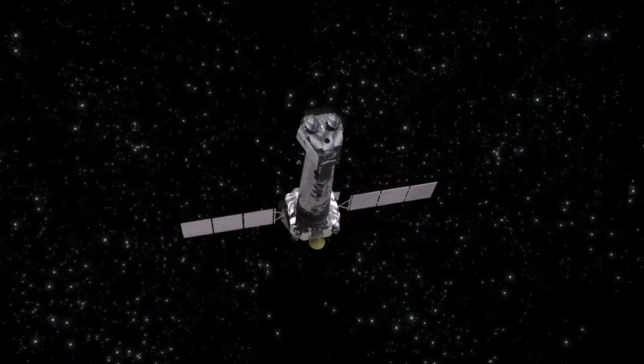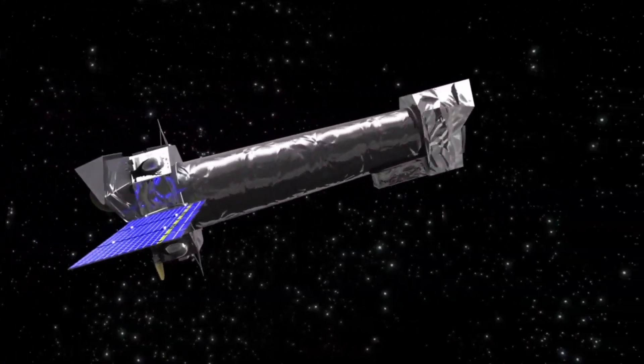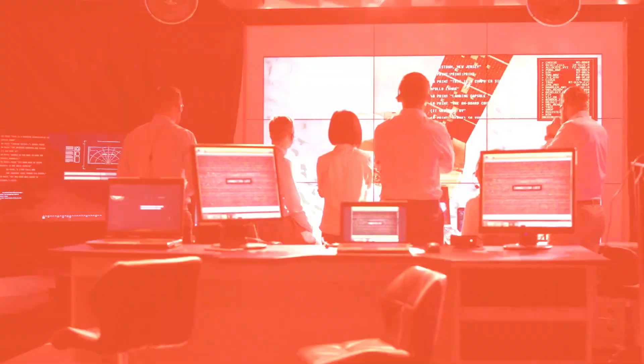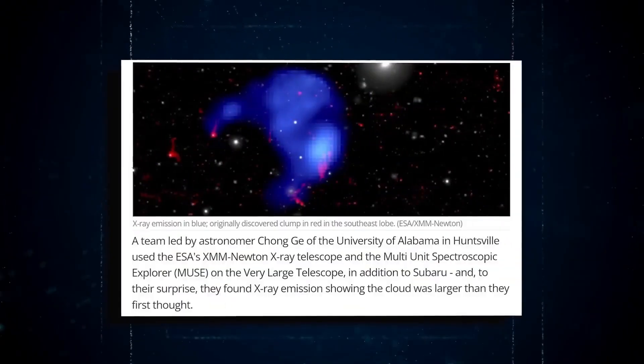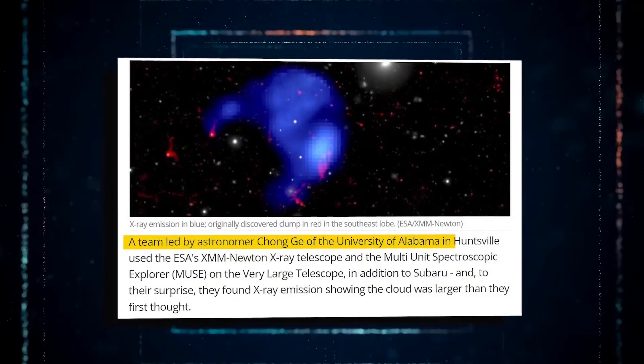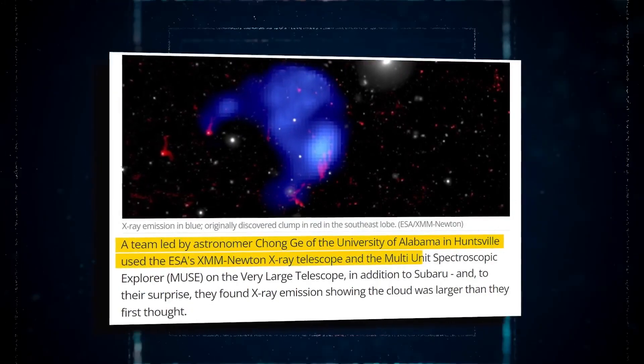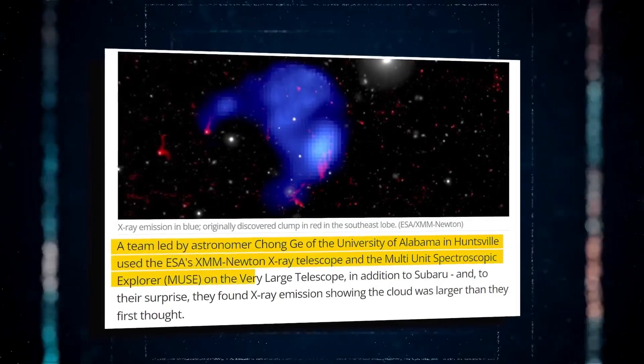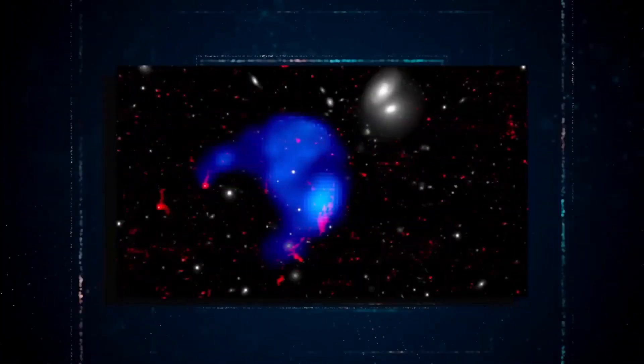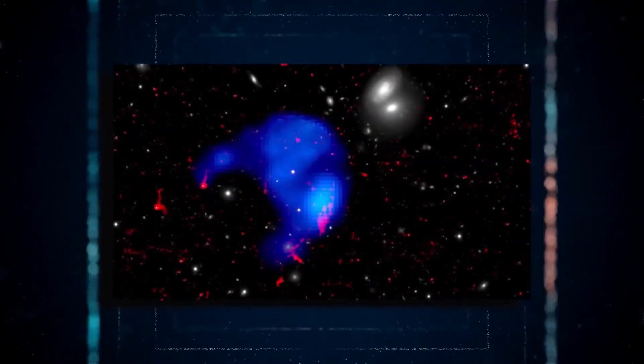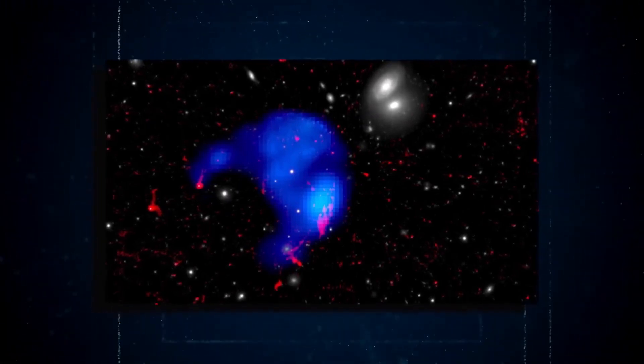The XMM-Newton X-ray Telescope, multi-unit spectroscopic explorer on the Very Large Telescope, and the Subaru Telescope were utilized by an astronomy team from the University of Alabama Huntsville under the direction of Chong-Gay. They found a massive cloud of hot, faintly glowing plasma in space that is much larger than the Milky Way galaxy. This unique cosmic gas cloud was likely cut off from a galaxy. The astounding revelation was that this cloud had remained congealed for hundreds of millions of years, as opposed to dissipating.